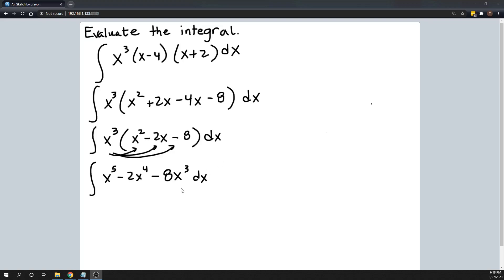So now that I've multiplied this out, it is basically three terms in here. Three things that are being added or subtracted to each other. I have x to the fifth minus 2x to the fourth minus 8x cubed.